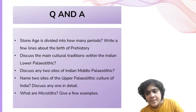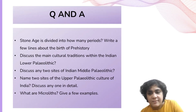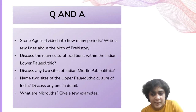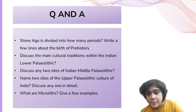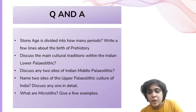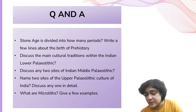The third question asks to discuss any two sites of the Indian Middle Paleolithic. These can be Chirki-Nevasa in Maharashtra and Didwana in Rajasthan. Chirki-Nevasa is notable for its association with the Nevasian industry, similar to the Mousterian industry. It was one of the first places where S.D. Sankalia recorded and demonstrated the presence of late tools in 1956. The Middle Paleolithic tools found at Chirki-Nevasa were primarily made from fine-grained rocks like chert, jasper, and chalcedony, and included scrapers, borers, points, Levallois points, and miniature hand axes.